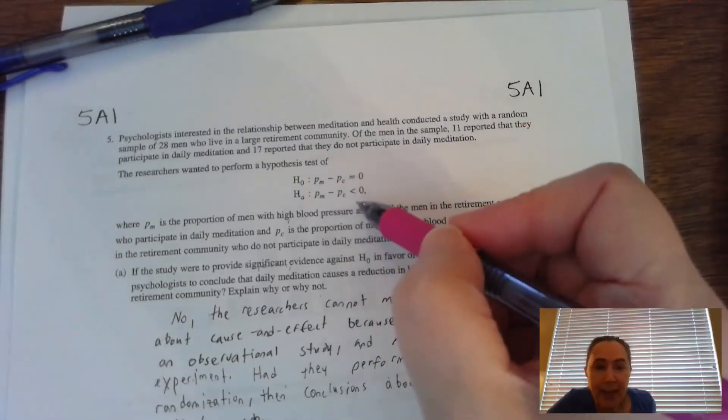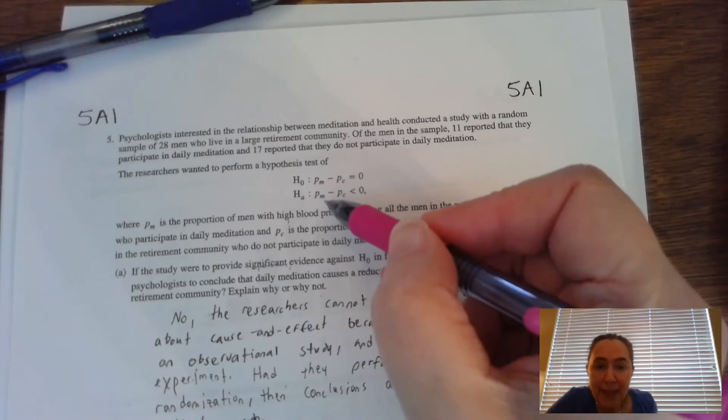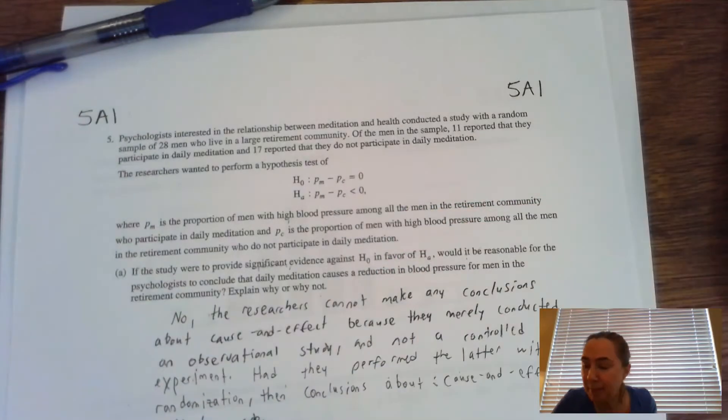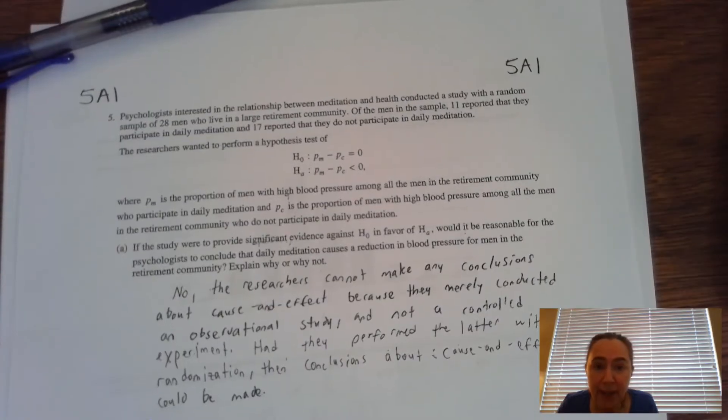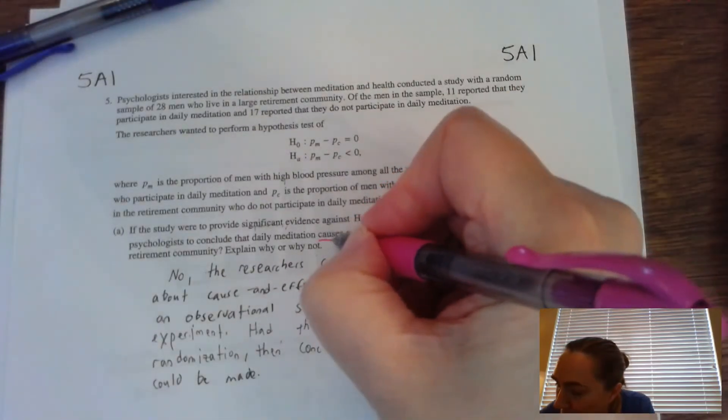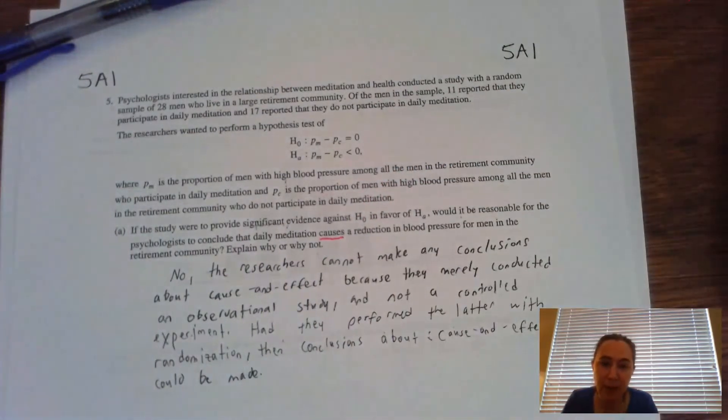So you can tell just from looking at the alternative hypothesis, they are thinking that meditation might reduce their blood pressure, at least that's what's hypothesized. Now A says, it's asking you to conclude if it's reasonable that meditation causes, the key word here being causes a reduction in their blood pressure.